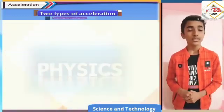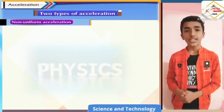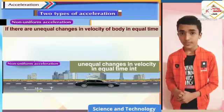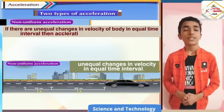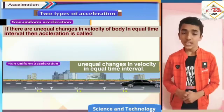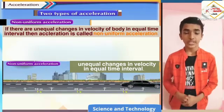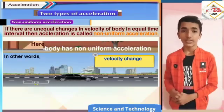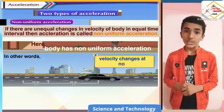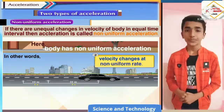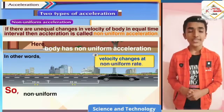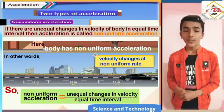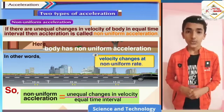Second, non-uniform acceleration: if there are unequal changes in velocity of a body in equal time intervals, then acceleration is called as non-uniform acceleration. In other words, a body has non-uniform acceleration if its velocity changes at a non-uniform rate. Non-uniform acceleration is equal to unequal changes in velocity upon equal time interval.